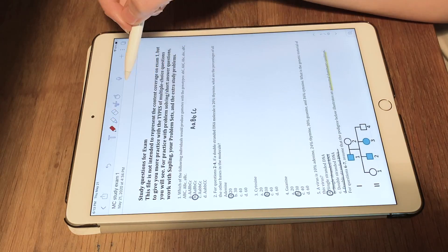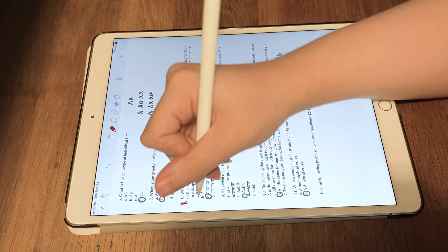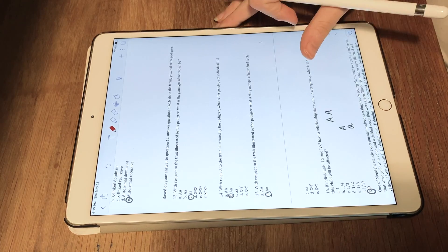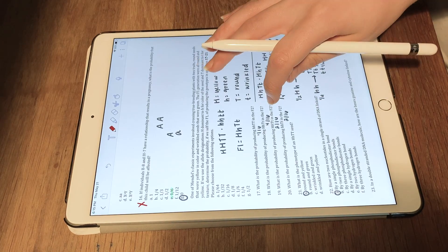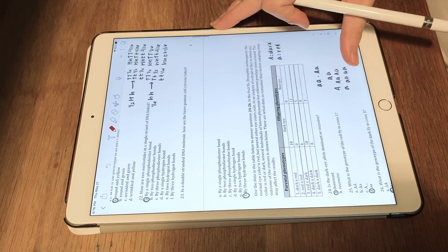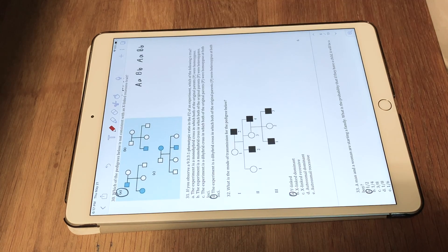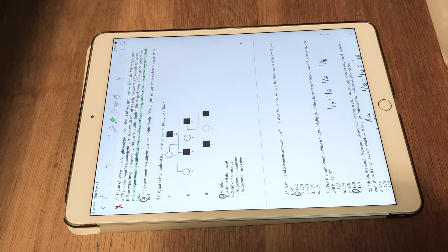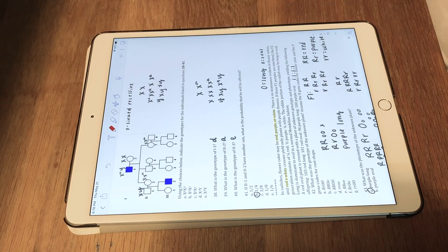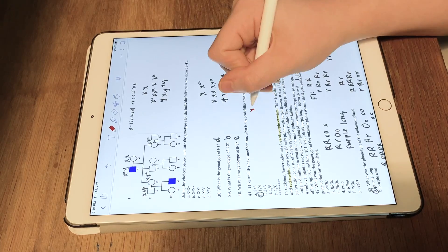After I was done taking the practice exam I went through and corrected it in red and highlighted the answer that was right in green. Later on, which I didn't film, for the ones I got wrong I tried to hand write out in my own words why I got them wrong and what the correct answer was.